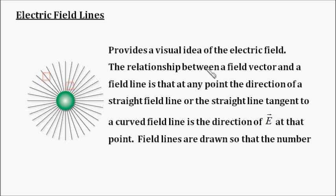The relationship between a field vector and a field line is that at any point, the direction of a straight field line, or the straight line tangent to a curved field line, is the direction of the electric field at that point.